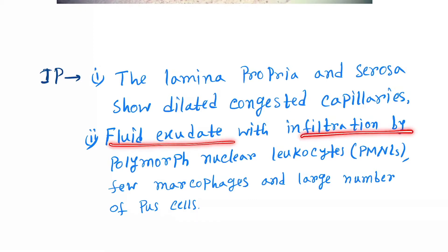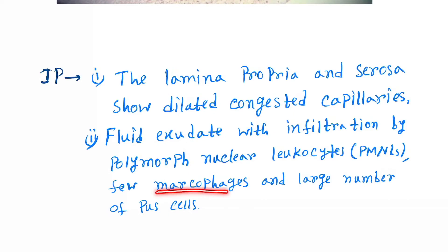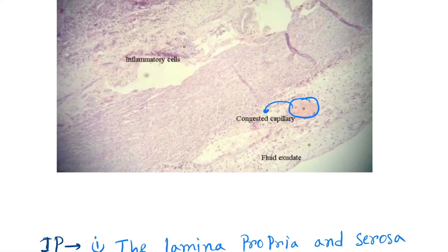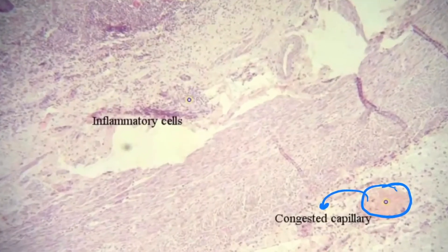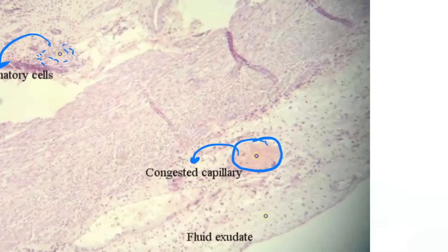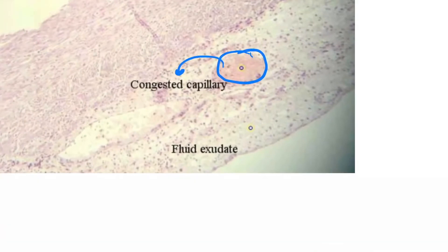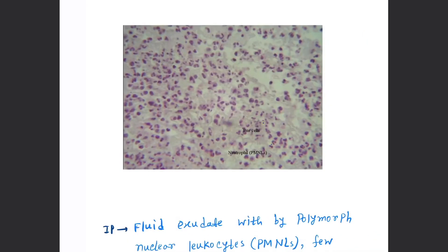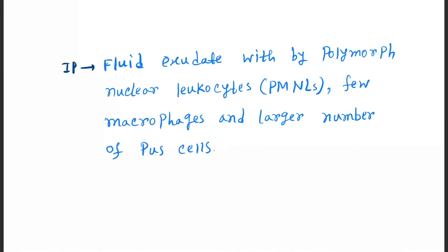The next feature is fluid exudate with infiltration by polymorphonuclear leukocytes — PMNLs — along with a few macrophages and a large number of plasma cells. You can see these small structures are inflammatory cells, and this area is the fluid exudate.